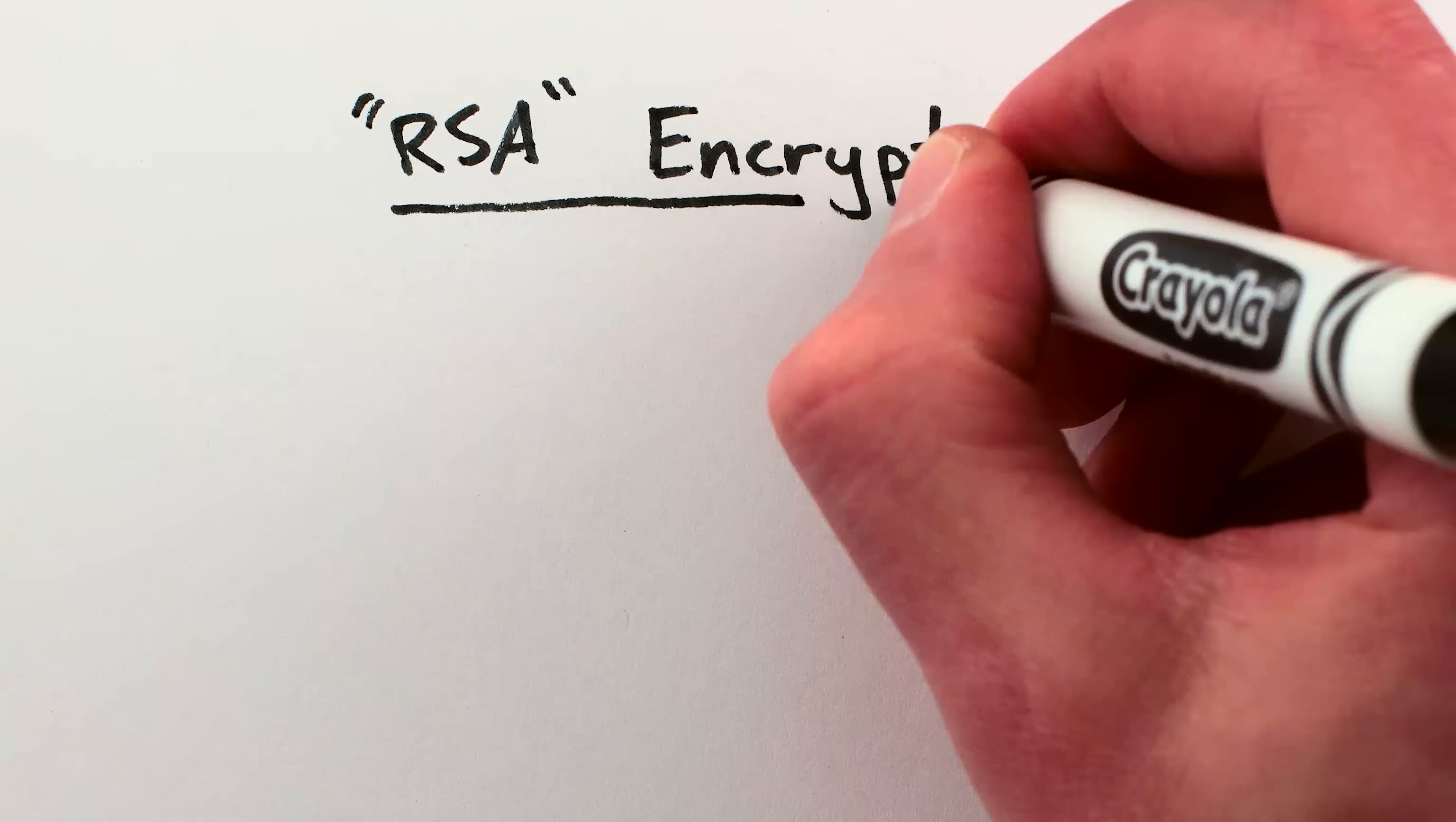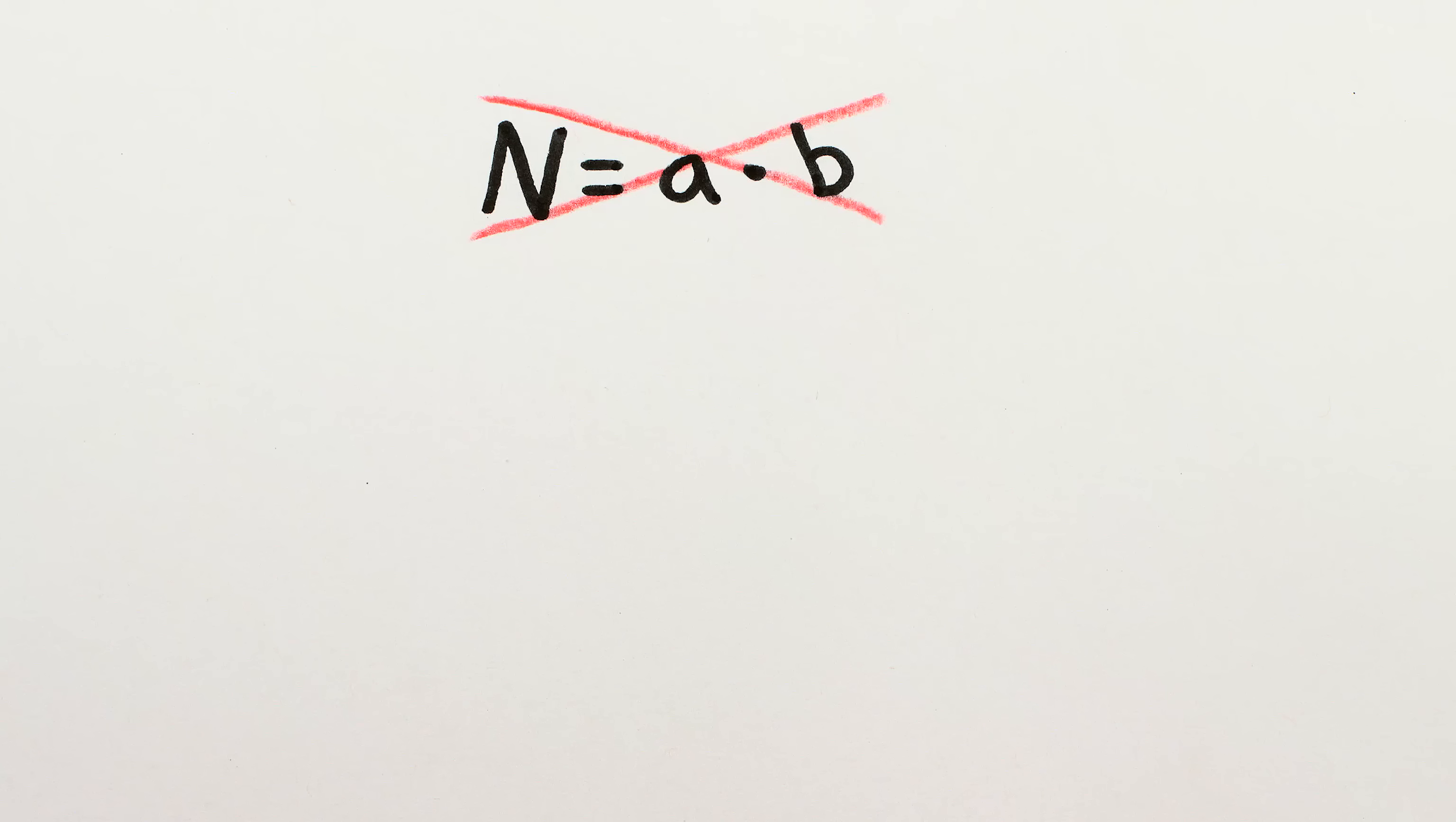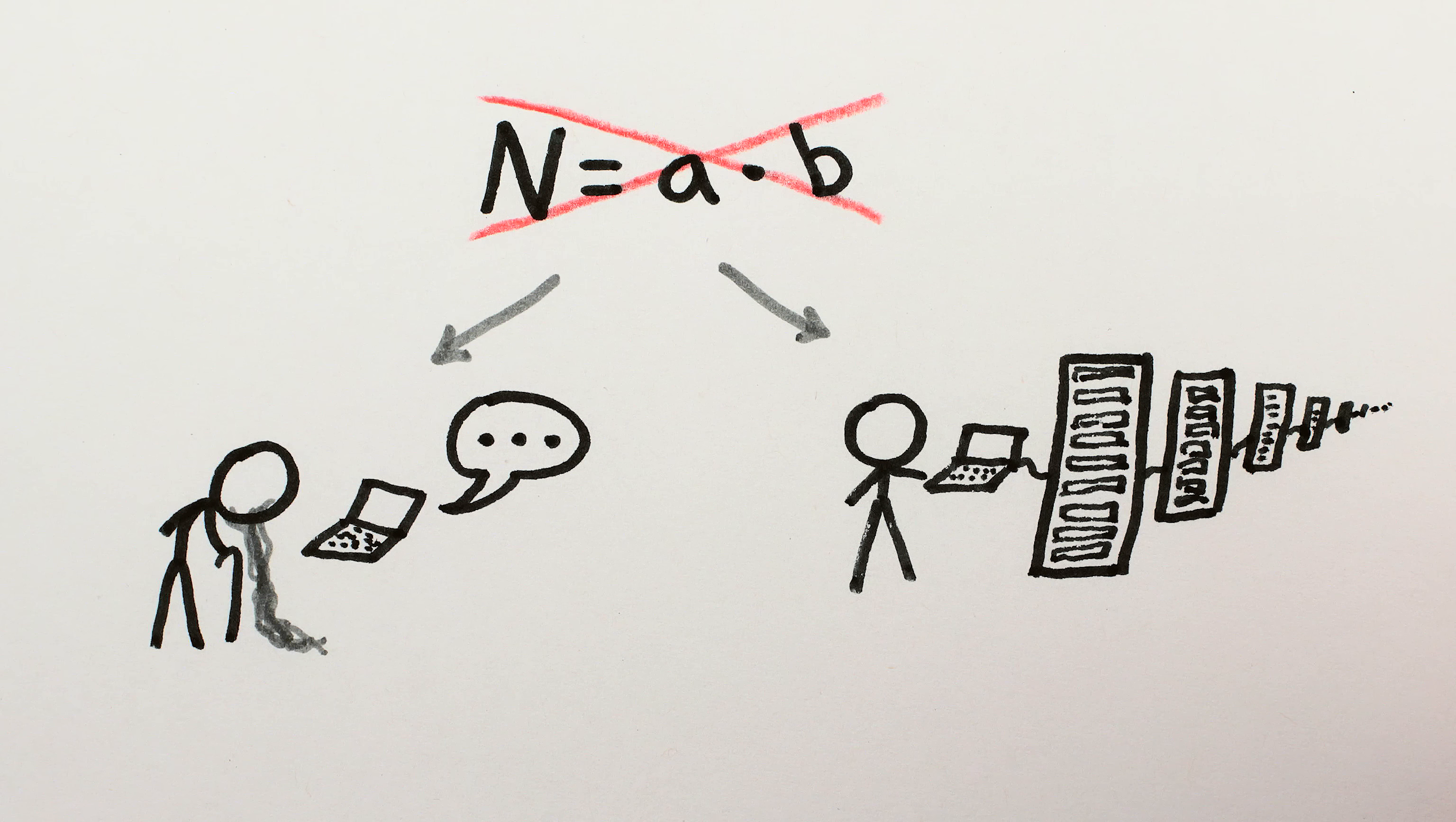The kind of encryption we're talking about garbles or locks messages using a large number in such a way that decrypting or unlocking the data requires knowing the factors of that number. If somebody doesn't have the factors, either they can't decrypt the data, or they have to spend a really, really long time or a huge amount of investment in computing resources finding the factors.